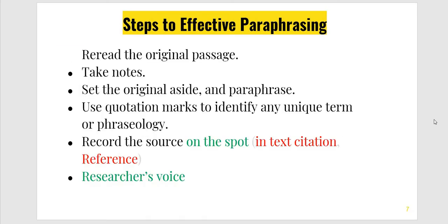Here are the steps to effective paraphrasing. Read the original passage. Take notes — bullet notes, a few key words. Set the original work aside and then paraphrase. This is the best technique for paraphrasing. I have followed this technique and my similarity index was just 4%. Use quotation marks to identify any unique term or phraseology.